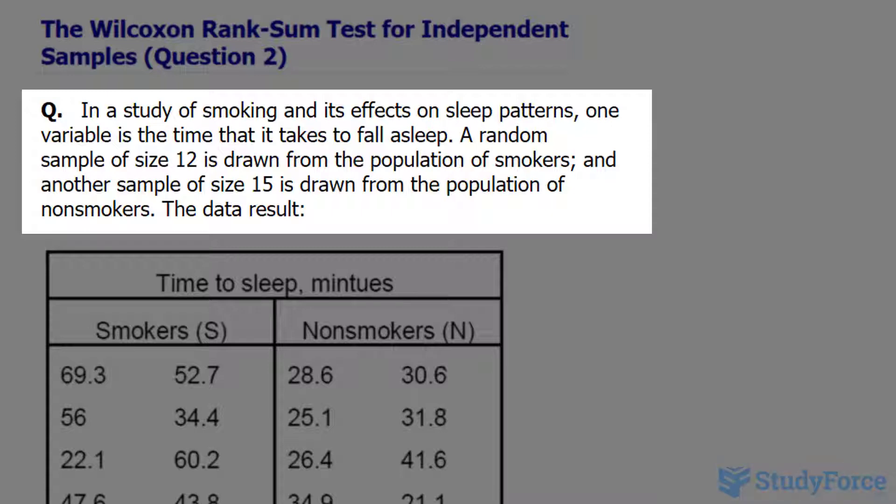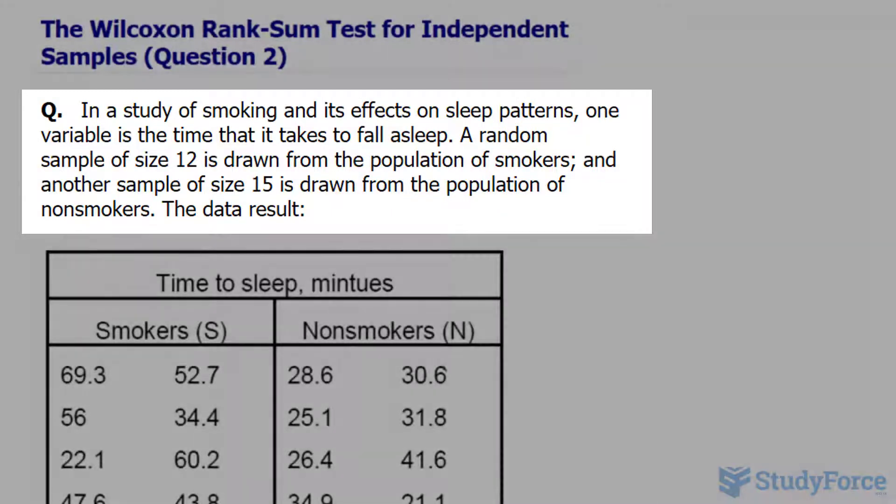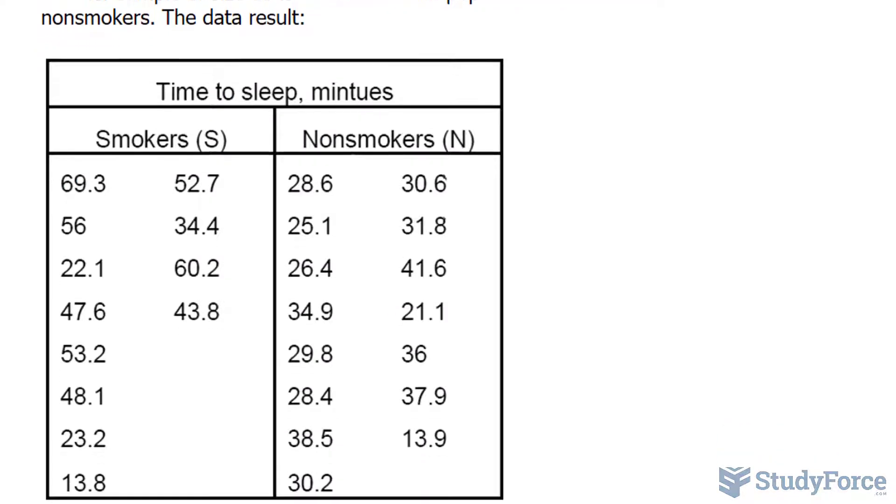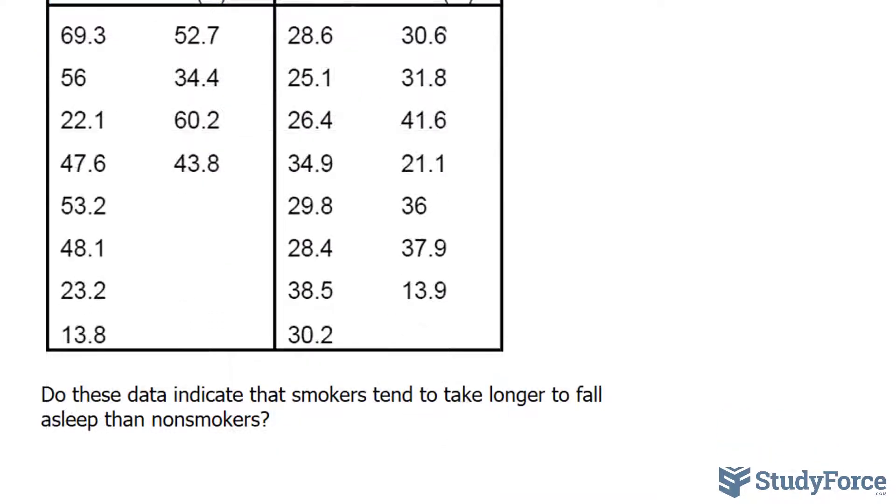A random sample of 12 is drawn from the population of smokers, and another sample of 15 is drawn from the population of non-smokers. The data results are shown underneath. We are expected to find whether this data indicates that smokers tend to take longer to fall asleep than non-smokers.